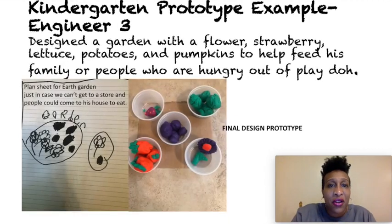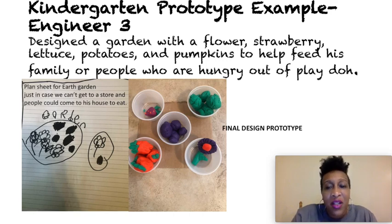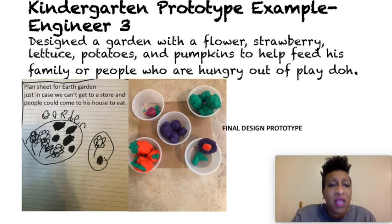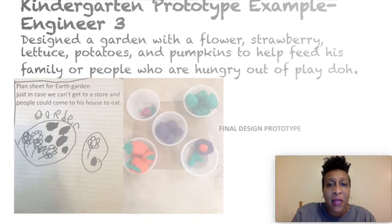Last but not least, I grabbed a kindergartner to help with this challenge. He told me he was going to design an Earth garden with a flower, one strawberry, lettuce, potatoes, and pumpkins. He wanted to help other people by letting them come and eat for free, making sure people who are hungry are taken care of. That's part of being a great engineer — trying to solve whatever problems we can. What's very interesting about his Earth garden is that he used Play-Doh as a recyclable material — you can use that and recycle it over and over again. Great job, engineers!